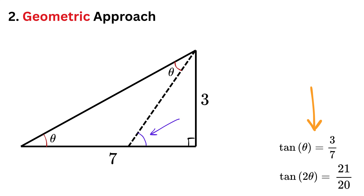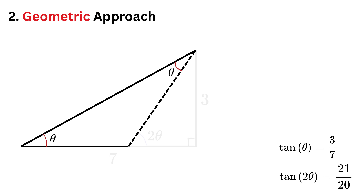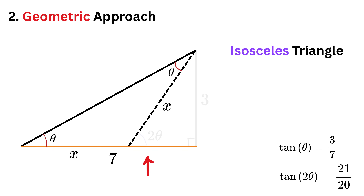Yes, right. Using the exterior angle theorem, this angle will be equal to 2 times theta. Now here comes the real magic. If both these angles are equal to theta, then this triangle will be an isosceles triangle. So if we label this side length as x, then this side will also be equal to x. Also, if this is 7 and this is x, then this piece will be equal to 7 minus x.